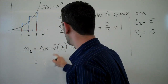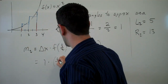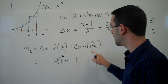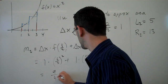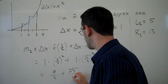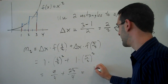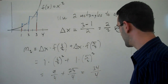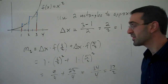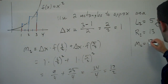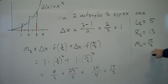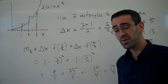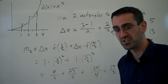Now we can evaluate. Plugging 3 halves in, we've got 3 halves squared. Delta x is 1. Plugging 5 halves in, 5 halves squared. So we get 9 fourths and 25 fourths, which is 34 fourths or 17 halves. And that gives me my midpoint approximation for the area under the curve. You'll notice that the midpoint approximation value of 17 halves is, as expected, between the two other approximations. So those are the three basic rectangular approximation methods.